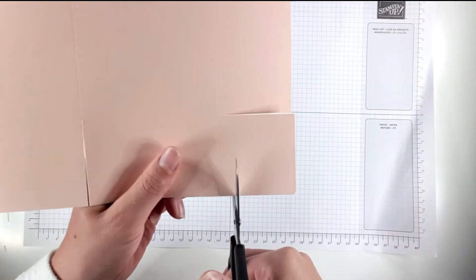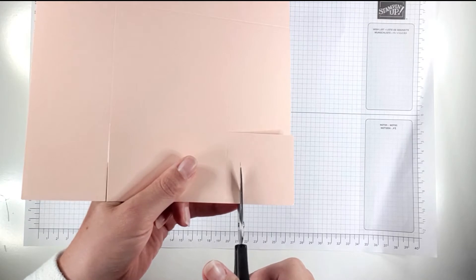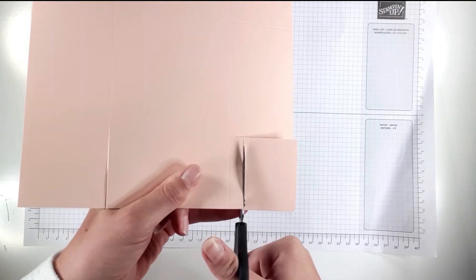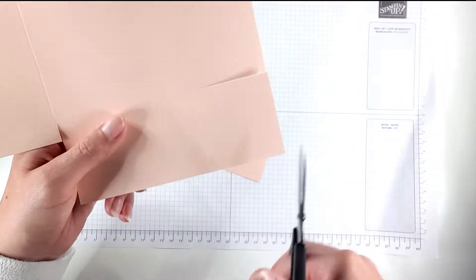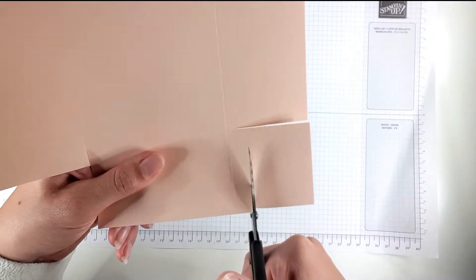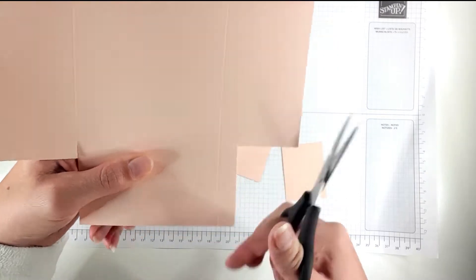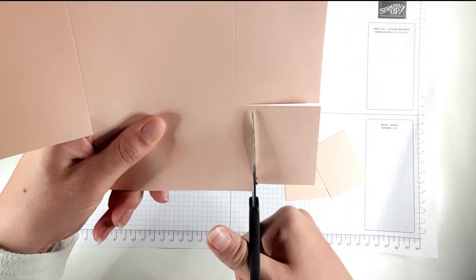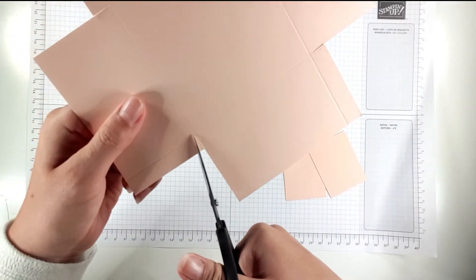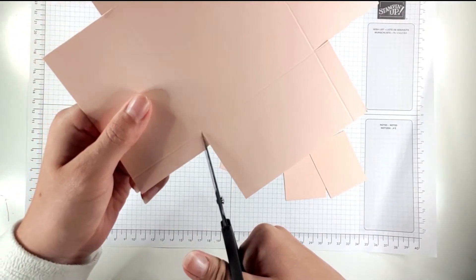I'm just going to use my scissors to cut probably about a centimeter away, half an inch away-ish from the score line, so that I've got a little flap on each corner. Then I'm just going to cut a little notch into each of the sides of the flaps.